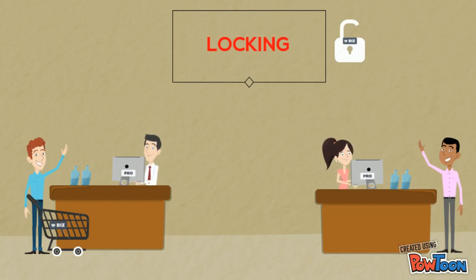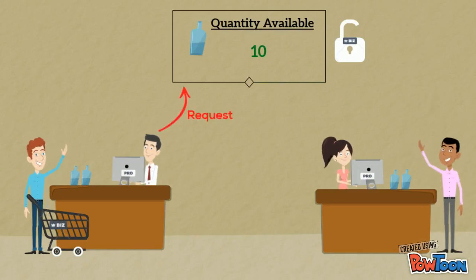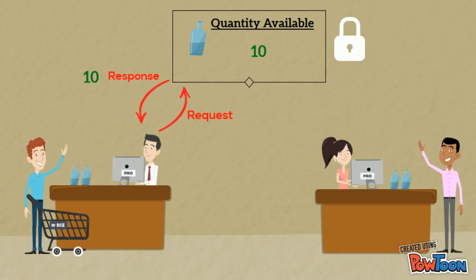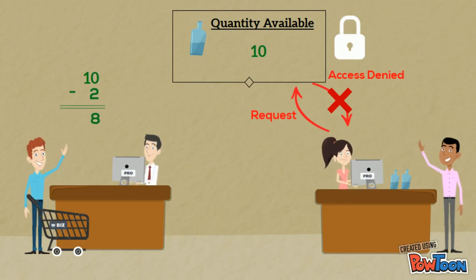Let's see how the same scenario would play out with the locking system implemented. Initially, the field is unlocked. The cashier requests to access the field. Since the field is unlocked, the cashier receives the value. The field is now locked. The stock receiver now requests to access the data, and because the field is locked, access is denied. The cashier works on his transaction. Only when the cashier is done with his transaction, he updates the field, and the field is unlocked.